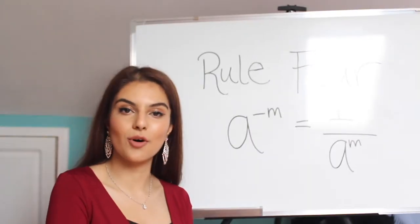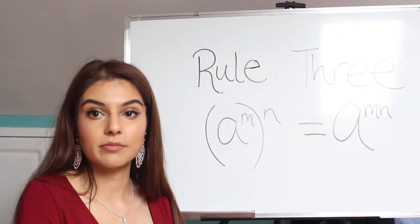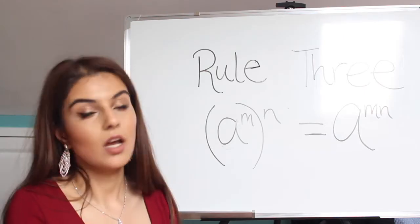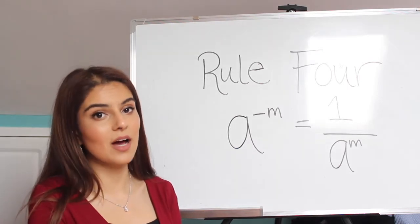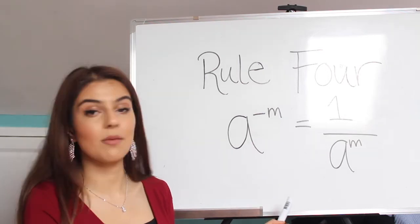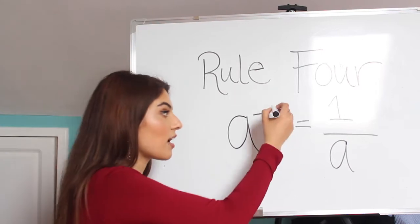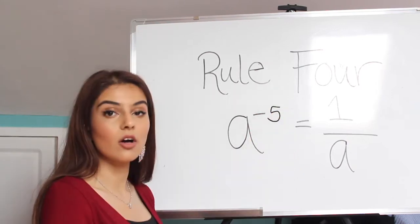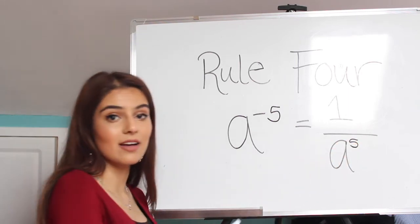So rule number 4. We're going through these rules pretty quick, aren't we guys? Almost there! If you ever see a number or a letter to the minus power, you would just put it 1 over that power. For instance, if we saw a to the minus 5, you would just do 1 over a to the power of 5. So the minus would go.